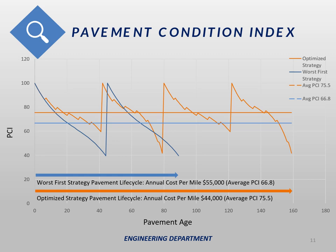Once the blue line hits 30 we would reconstruct the road, and this cycle is shown twice. The orange line represents a road that does have mill and overlay maintenance performed on it. We would try to do a mill and overlay at critical points right around a PCI value of 60. When we perform that work the road is repaired and the PCI is increased back to a hundred — and you can see that this cycle is repeated several times. Eventually a mill and overlay won't be effective and we would let the road decrease down to about 30 where we would then do a rehab or a reconstruction.